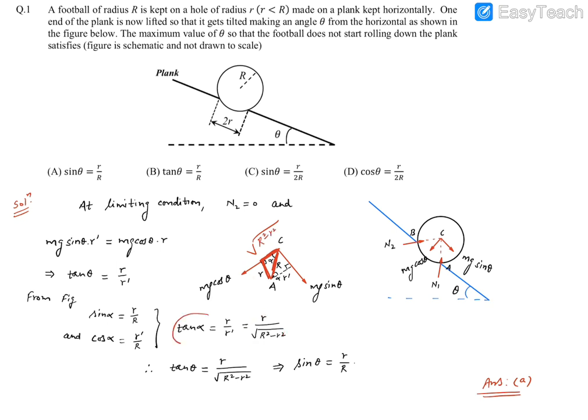Now this tan alpha is R by R dash and tan theta is also R by R dash. Basically these two will say this alpha angle is nothing but theta angle which could have been calculated by geometry itself or using the point that normal reaction and Mg should be in the same line of action. Now using this we can claim this tan theta is coming as small r divided by under root R square minus r square.